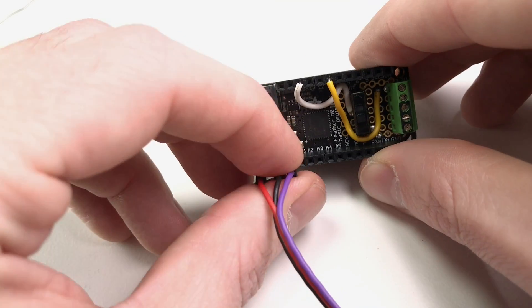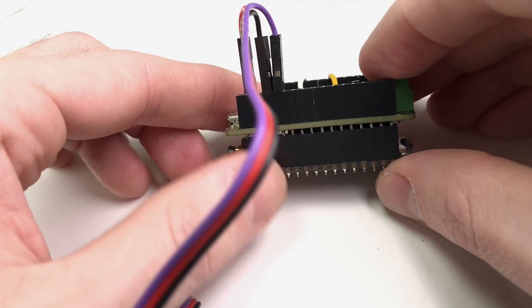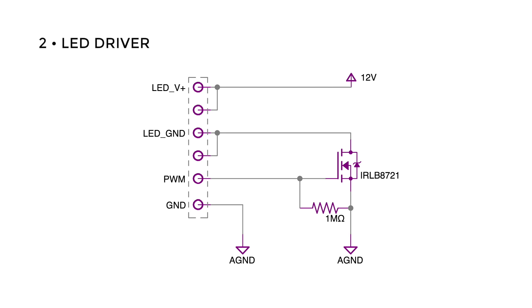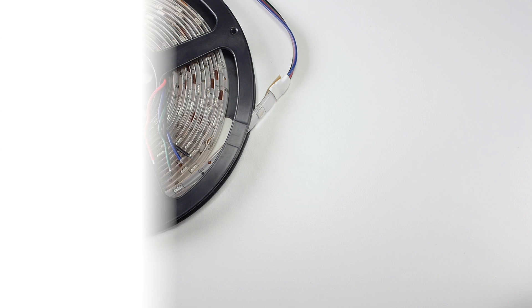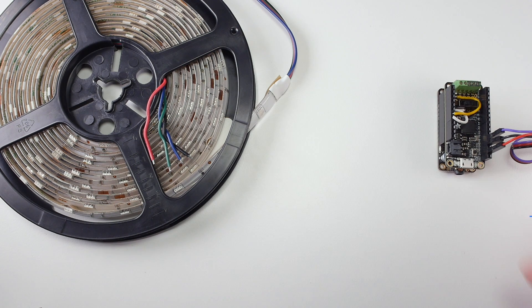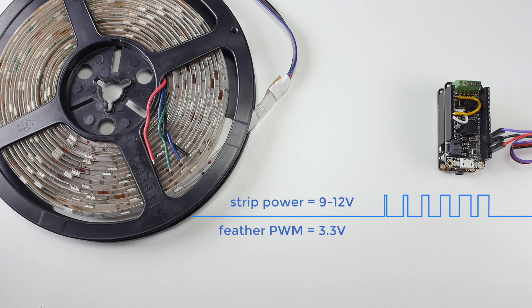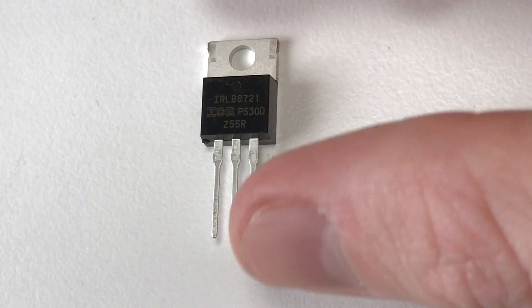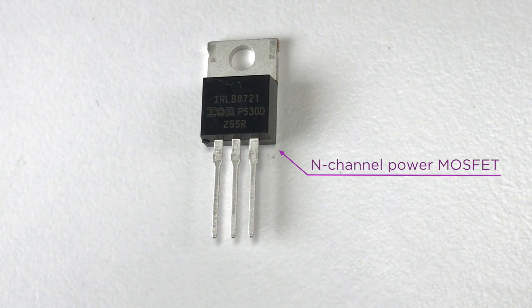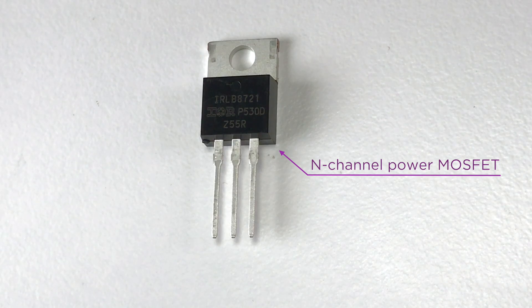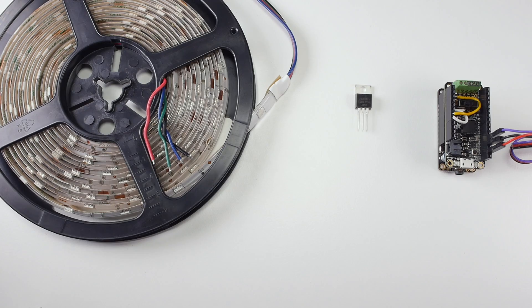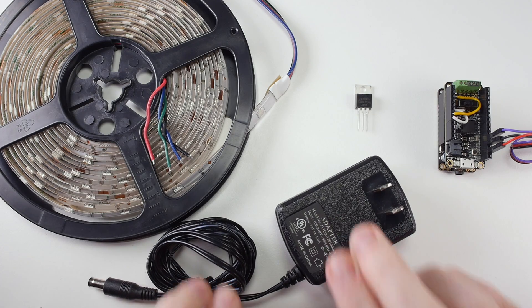I can move on to making the driver boards for the LED strips. The Feather's PWM signal is far too weak to power one of these LED strips alone, so we'll need a sensitive transistor like this N-channel MOSFET, which will allow the small 3.3 volt PWM signal to quickly switch the LED strip's 12 volt power on and off.